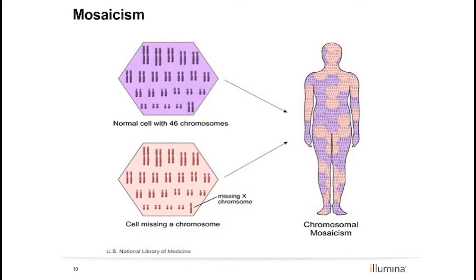Mosaicism is a phenomenon that occurs when all the cells in an individual's body are not comprised of the same genetic material. Some of the cells may have a missing or extra chromosome, while others do not. This slide shows a woman who is mosaic for monosomy X. The pink areas show body tissues made up of cells missing one copy of the X chromosome (45X), whereas the purple areas show tissues with the typical number, 46XX. When an individual is mosaic for an aneuploidy, it is difficult to predict how severely affected the individual may be.